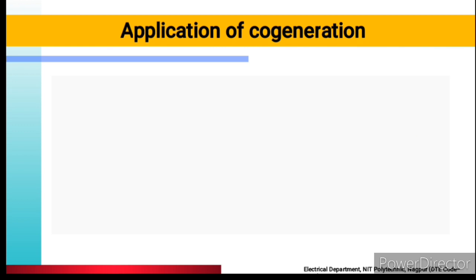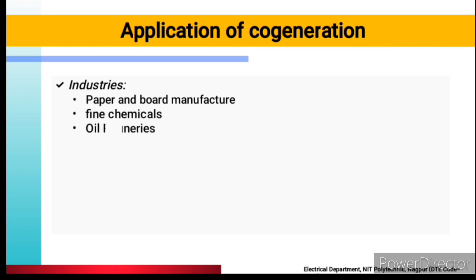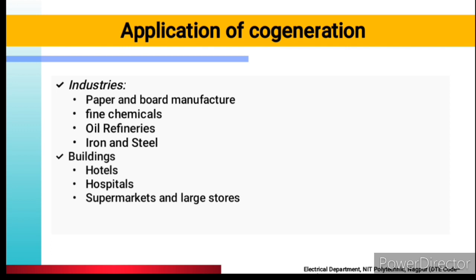Application of co-generation — where can co-generation be used? Paper and board manufacturing, fine chemicals, oil refineries, iron and steel, buildings, hotels, hospitals, supermarkets and large stores, and office buildings.